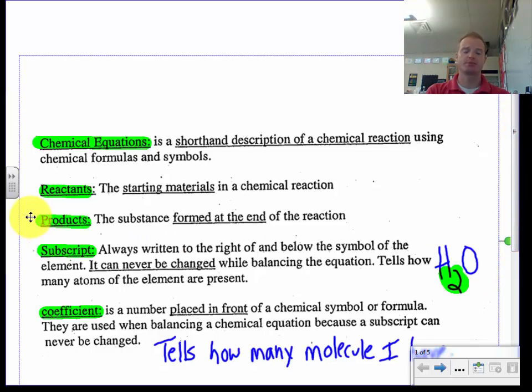So we're talking about chemical equations. A chemical equation is a shorthand description of a chemical reaction using chemical formulas and symbols. So H2O.